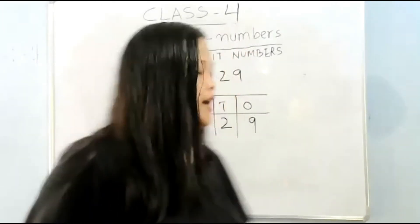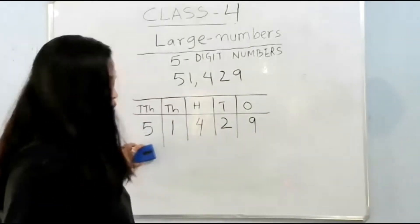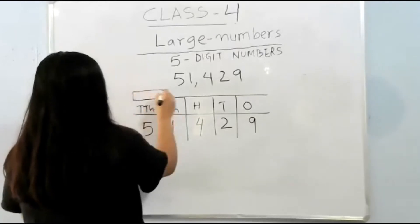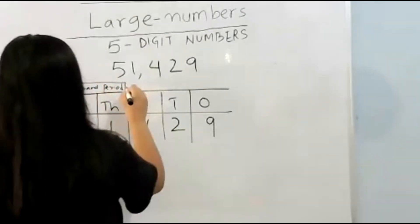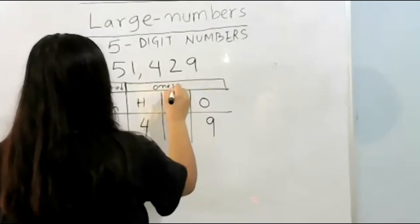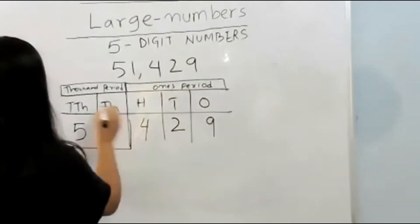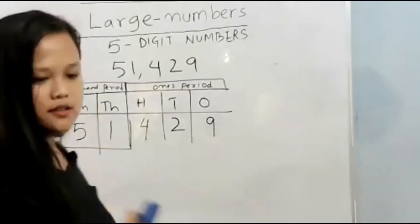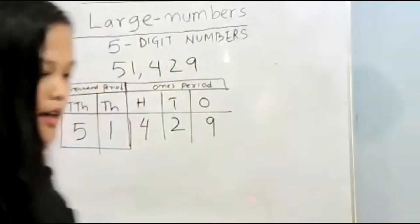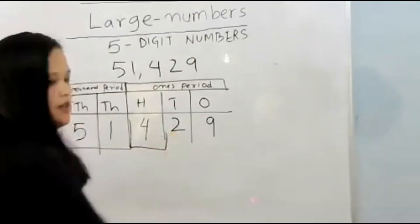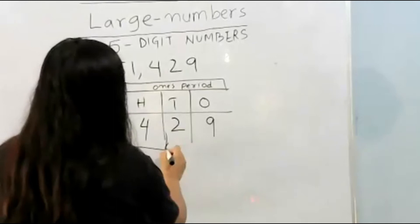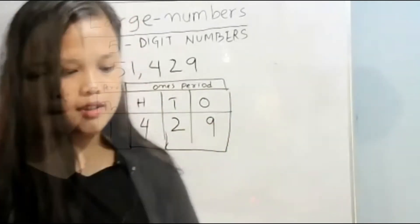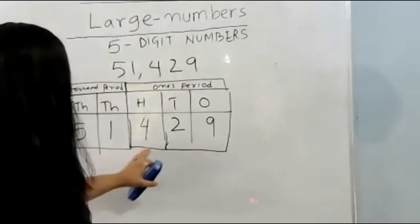There are three steps in reading numbers. Step one: how many thousands. Here there are five and one — they are in the thousands period. These two are in the thousands period, so this is 51,000. Step two: how many hundreds. Here there are four hundreds. Step three: the digits in the tens and ones place, we read together. These two make 29. So we read the number as 51,429.